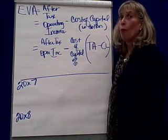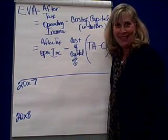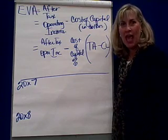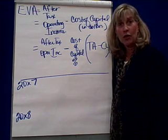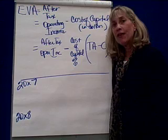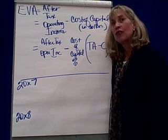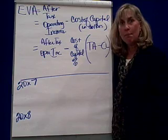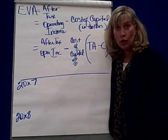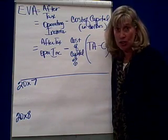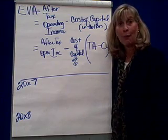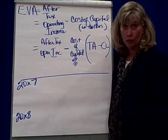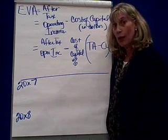So a new measure came on the scene called EVA, or Economic Value Added. EVA is similar to residual income, but it also makes the manager accountable for tax implications and the cost of capital — in other words, the cost of the money or the cost of the resources they're entrusted with.